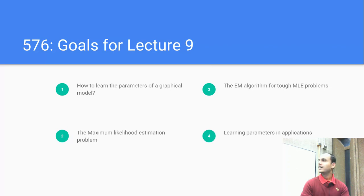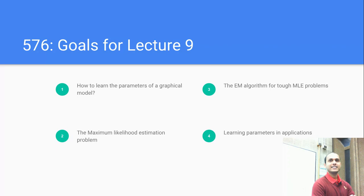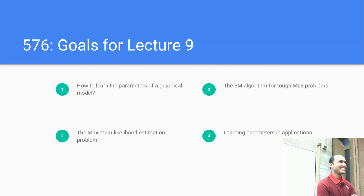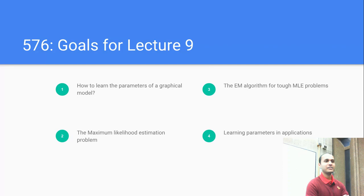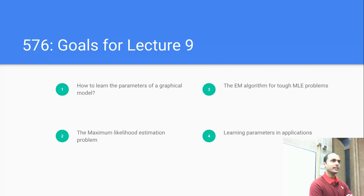How's your progress with the assignment going? If you have no questions, the later part of the assignment is about sampling, which was covered in the last lecture. Learning of Graphical Models is today's lecture, but there's no question in the assignment about that.